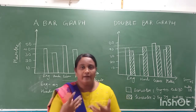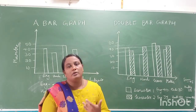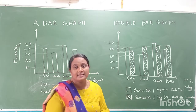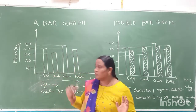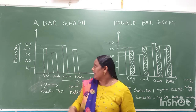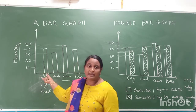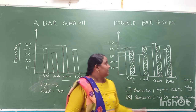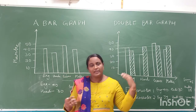From all this together, we can understand that there is some improvement and some decrease in marks. This is how we analyze marks with the help of a double bar graph. The difference between a single bar graph and a double bar graph: with a single bar graph we can only analyze one set of data with no comparison, but with a double bar graph we can compare data across two semesters. That is the key benefit of the double bar graph.